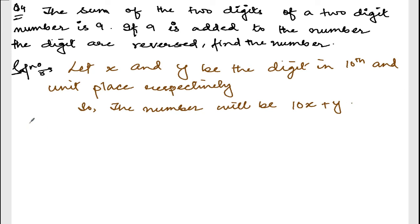Also given: the sum of two digits of a two-digit number is 9. So if you do x plus y, you are going to get 9. If 9 is added to the number, the digits are reversed. So if you add 9 to this number, the digits will reverse. This is equation number 1.